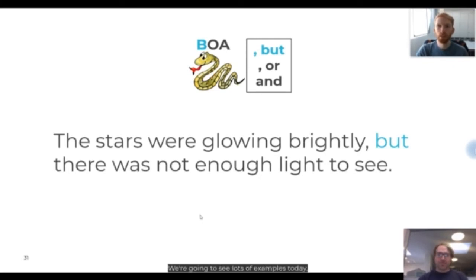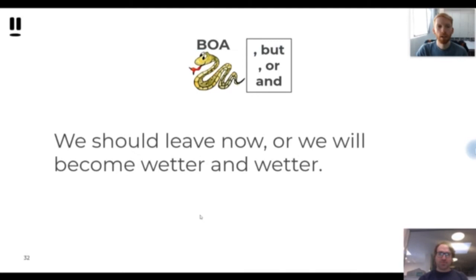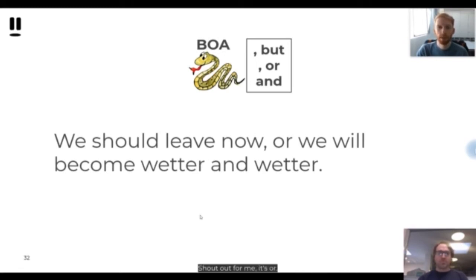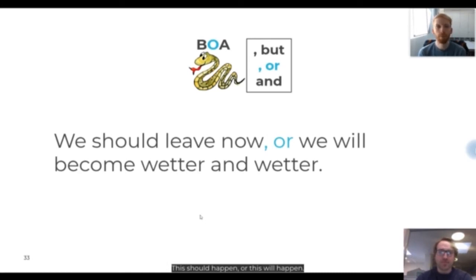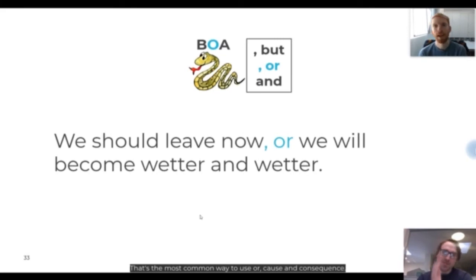We're going to see lots of examples today so we'll get a feel for how to use it. Our next coordinated conjunction: 'We should leave now or we will become wetter and wetter.' OR is another tricky conjunction to use — harder than BUT and harder than AND. You use OR when you have some sort of cause followed by consequence: this should happen OR this will happen. That's the most common way to use OR — cause and consequence.